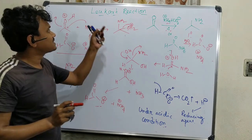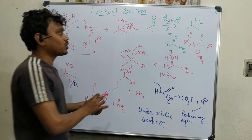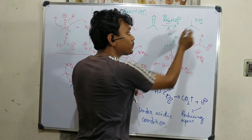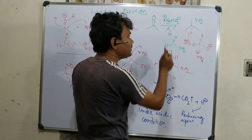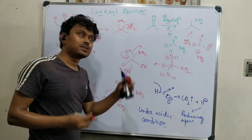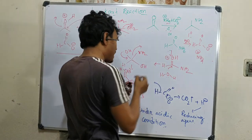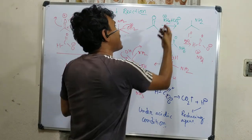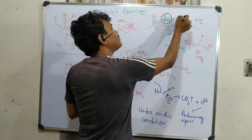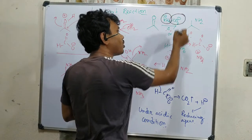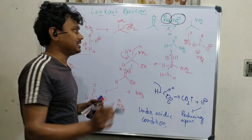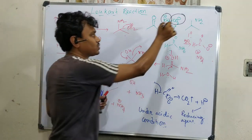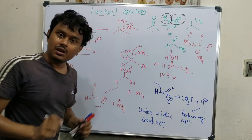Today we discussed Leuckart reaction which converts carbonyl into primary amine using reductive amination method in presence of ammonium formate, where the ammonium group acts as a source of ammonia and formate acts as a source of reducing agent - the hydride - under acidic condition. This is the strategy to prepare primary amine.